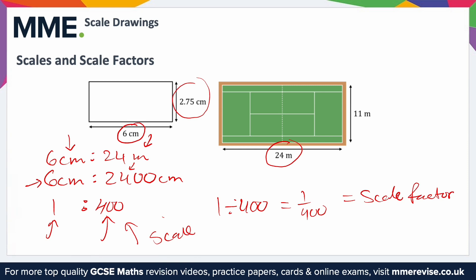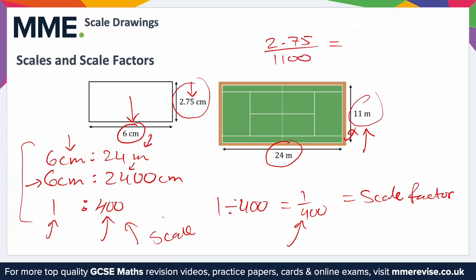You could of course find this using the widths instead, as long as you're choosing equivalent lengths and not mixing them. For example, using the 6 and the 11 would be wrong because that mixes a width with a length. The two widths correspond to each other, and the two lengths correspond to each other. For a quicker method, just pick two corresponding lengths — say 2.75 and 11 — convert to the same unit (11 metres = 1100 centimetres), and divide: 2.75 divided by 1100 gives 1 over 400 again.